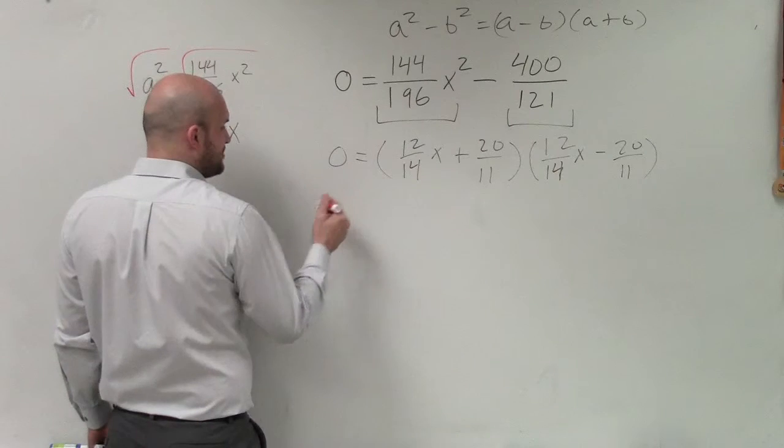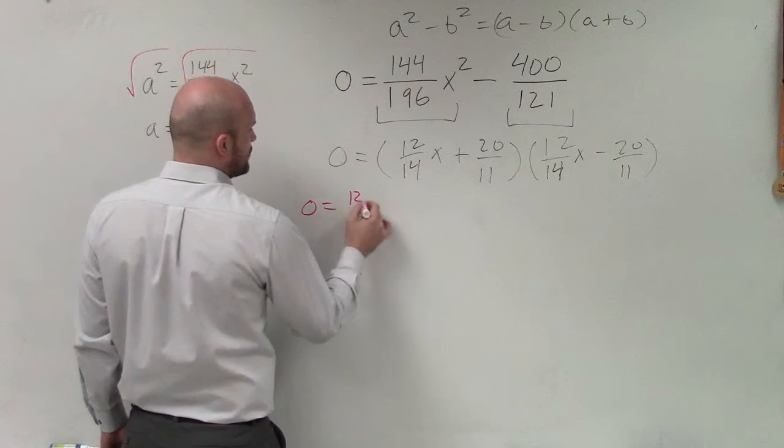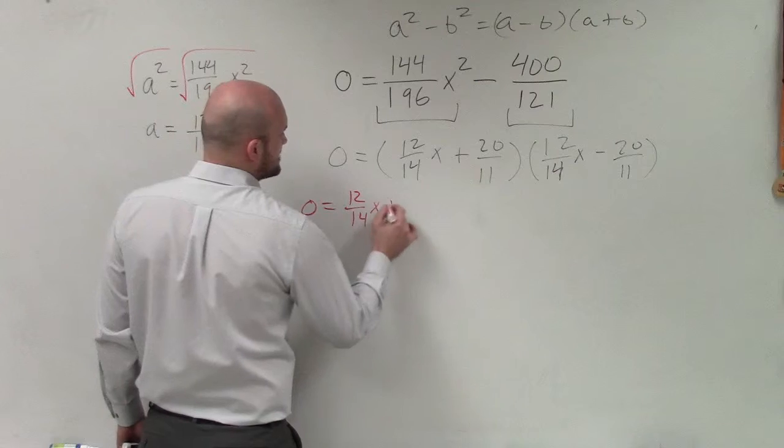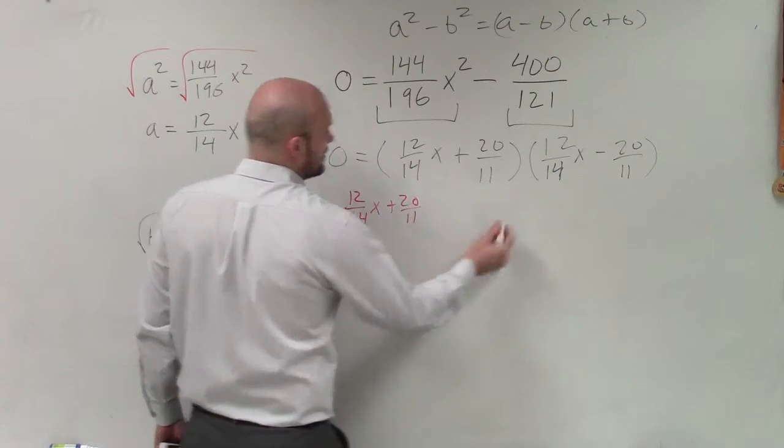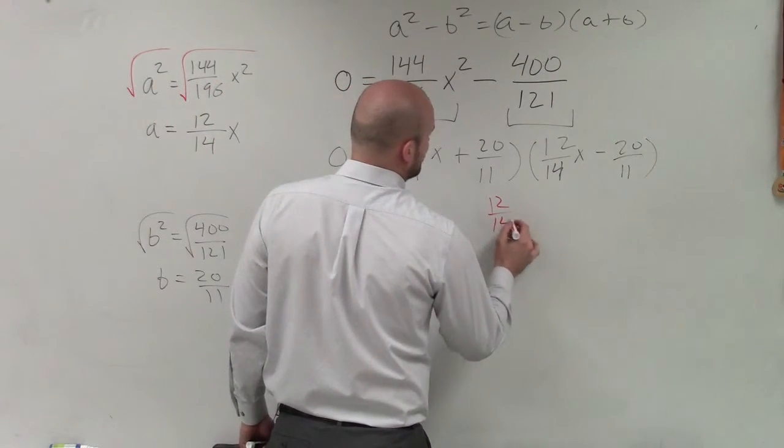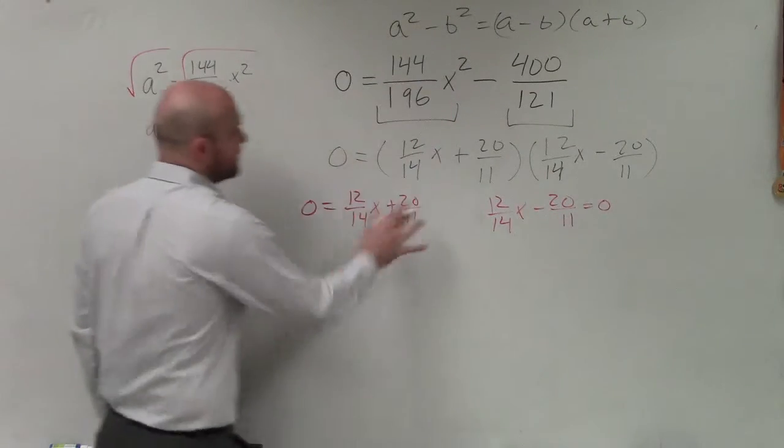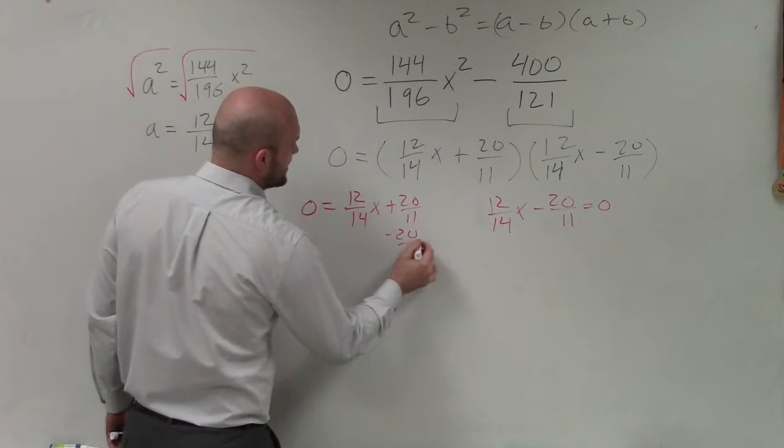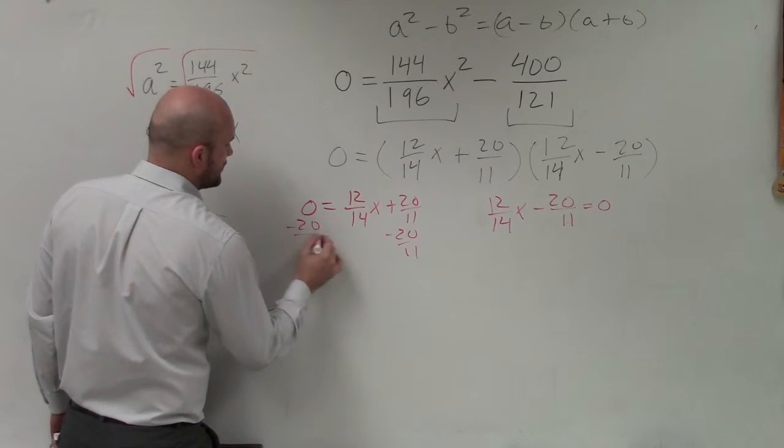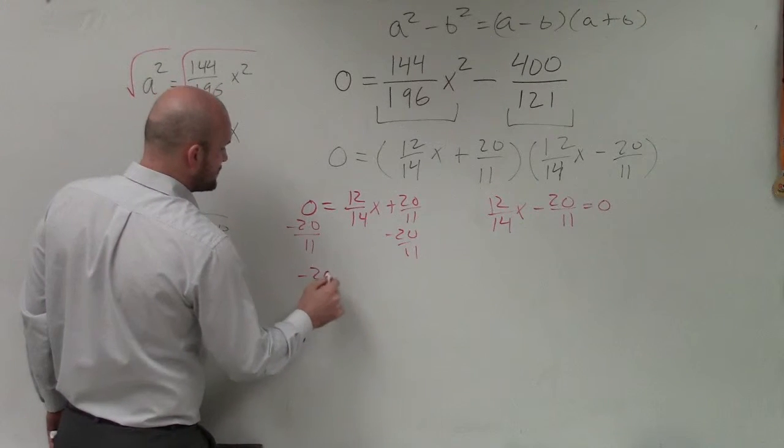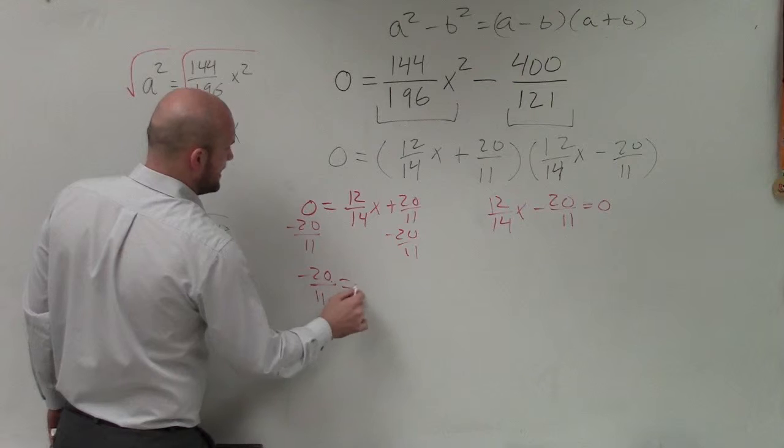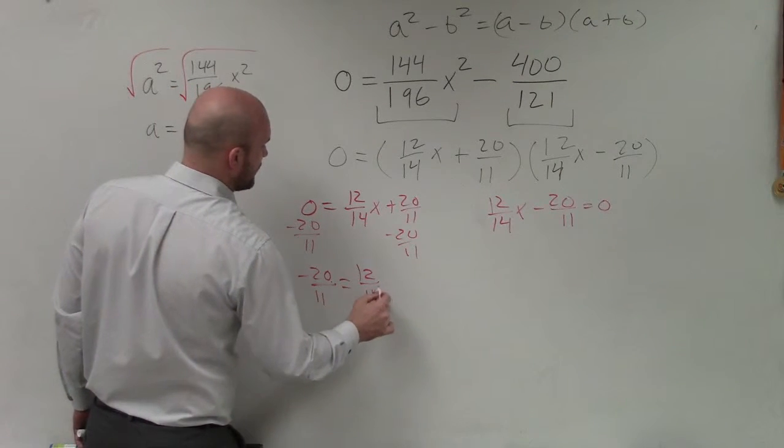So now I set these both equal to 0 by applying the 0 product property. So I have 12 over 14x plus 20 over 11 and 12 over 14x minus 20 over 11 equals 0. Now, I solve each of these separately by using my inverse operations. I subtract the 20 over 11. And therefore, I have negative 20 over 11 equals 12 over 14x.